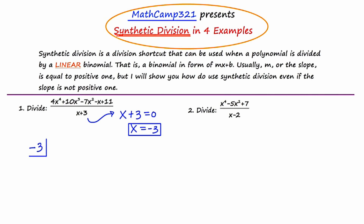Just to be sure you know where those values are coming from, it's up here in the dividend. I've drawn a horizontal line far enough down to leave room for another row of numbers, and that row is going to be important. In synthetic division, the first coefficient of the dividend — in this case 4 — just drops straight down. Synthetic division is a combination of multiplying and adding. So I'm going to start by multiplying negative 3 times 4, which is negative 12, and write that result here. Then I add 10 and negative 12 to get negative 2.